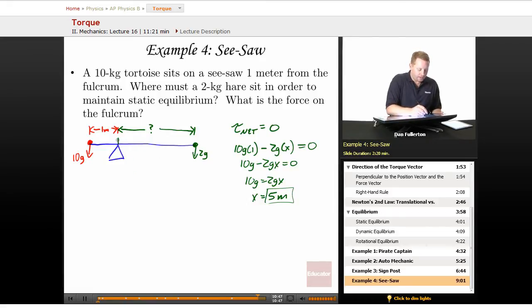Newton's second law says that we must have some force from the fulcrum pointing back up. So if we write Newton's second law for that object, F net in the y direction, we have Fp minus 10 g minus 2 g equals zero. Therefore the force of that pivot point, the fulcrum, must be 12 g or 120 newtons.